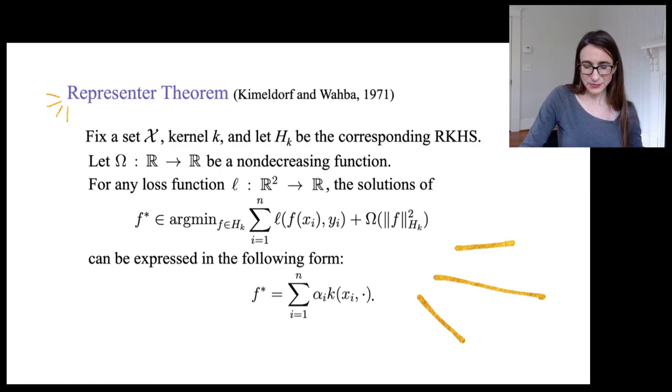Anyway, so I'm really excited about this theorem because, again, it says a lot about the power of working in reproducing kernel Hilbert spaces. You can choose any loss you want. You can choose any omega you want as long as it's non-decreasing. And the solution of that optimization problem is in the span of just the points you selected. So it's cool. Magical.